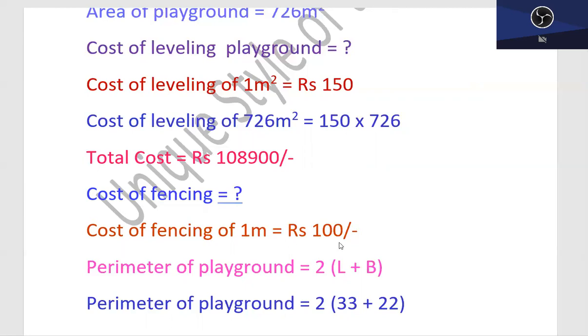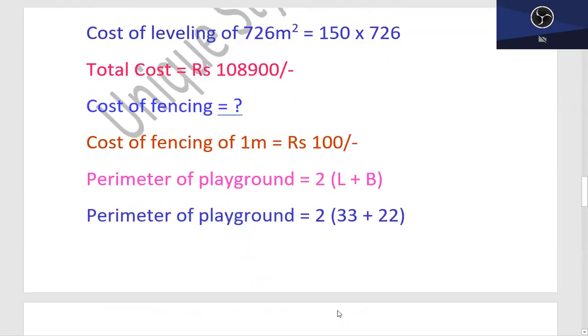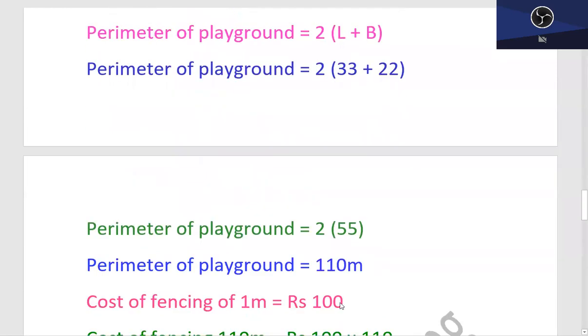Perimeter of playground is equal to 2 into length plus breadth. Chunke ye playground jo hai wo rectangular shape ka hai, isliye length aur breadth ko aap add karke 2 ke saath multiply kar lenge to aapko perimeter of that shape mil jayega. 33 plus 22, 55 hote hain, isko 2 se multiply karenge to perimeter of the playground will be 110 meter.